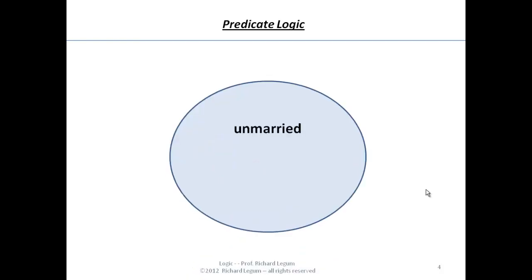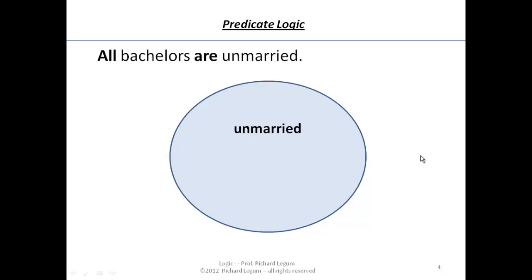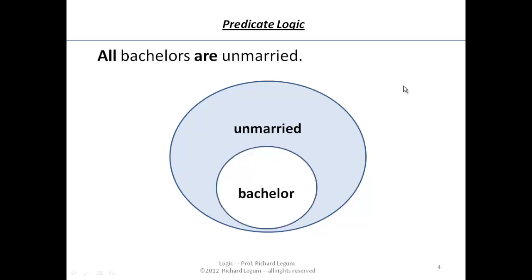Remember we were talking about 'all bachelors are unmarried.' Think of the circle as representing the class of everything that's unmarried. All bachelors are unmarried tells us that everything in the class of bachelors is going to be in the class of unmarried people. So anybody who is a bachelor is going to be in the bigger class of unmarried people. The class of unmarried people contains everybody in the class of bachelors.